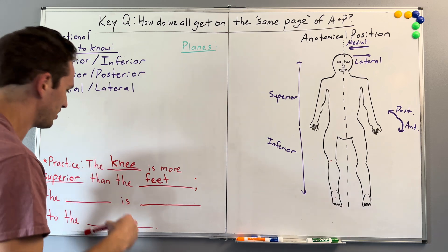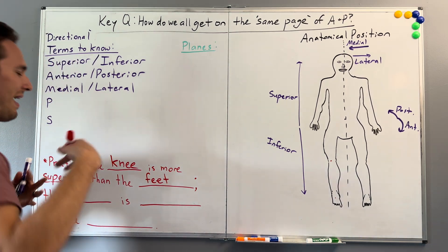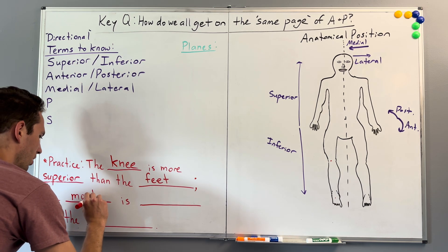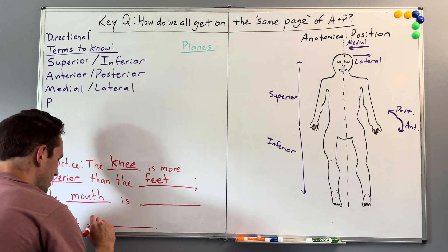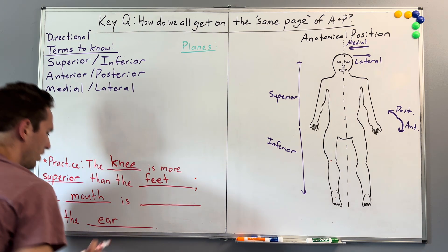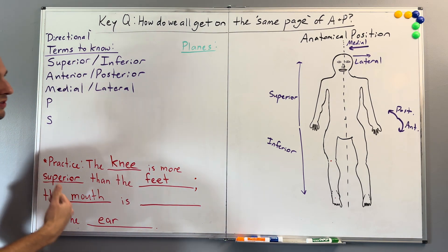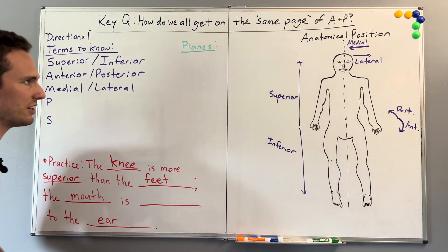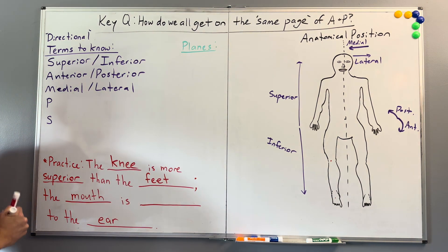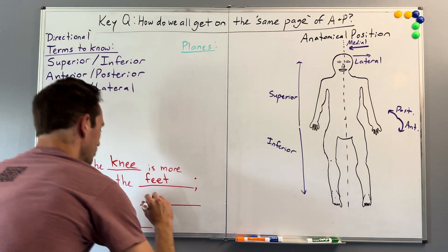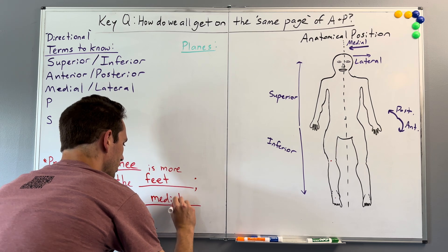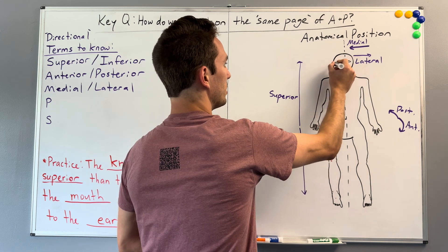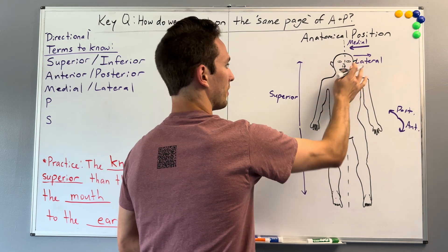Let's practice. The mouth is more blank to the ear — what would you fill in, medial or lateral? We know the mouth is going to be more medial to the ear because it's more towards the midline. Whereas the ear would be more lateral because it's more on the outside.